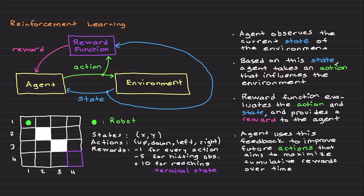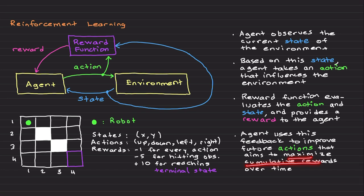The agent's action changes the environment — think about a robot going left or right. The reward function looks at the agent's action and the state, and provides a reward to the agent. This can be positive or negative, sometimes called positive reward, negative reward, or penalty. Based on this reward feedback, the agent improves future actions with the goal of maximizing cumulative rewards over time.